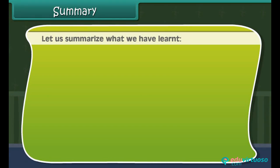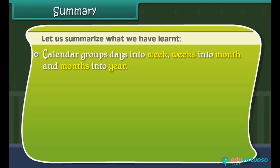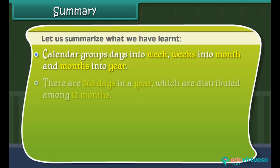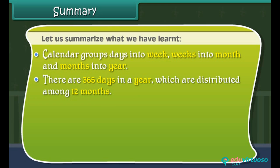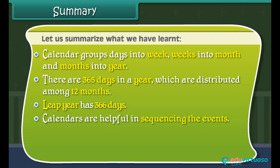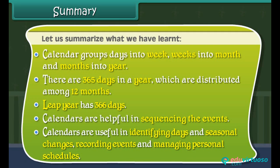Let us summarize what we have learned. A calendar groups days into weeks, weeks into months, and months into a year. There are 365 days in a year, distributed among 12 months. A leap year has 366 days. Calendars are helpful in sequencing events, identifying days and seasonal changes, recording events, and managing personal schedules.